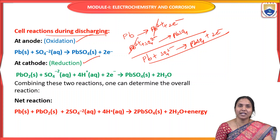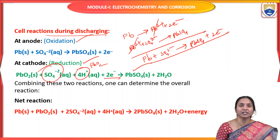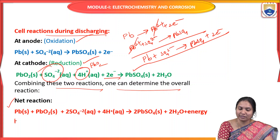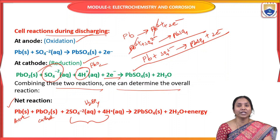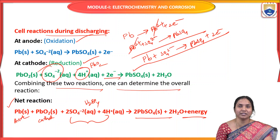At the cathodic area during discharging, reduction takes place. PbO₂ reacts with H⁺ and SO₄²⁻ from the electrolyte, gains two electrons, and forms PbSO₄ precipitate at the cathodic area. An important point: during the discharging process, the concentration of H₂SO₄ decreases, lead sulfate precipitate forms at both anodic and cathodic areas, and energy is lost.